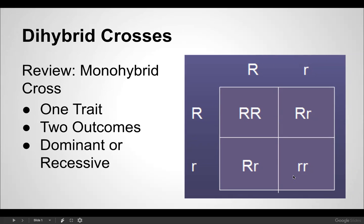The top one is a capital R dominant, lowercase r recessive, and the same thing on the left. When you put those together, you wind up getting that typical outcome where you have one pure capital R dominant, one pure lowercase r in the bottom right-hand corner, and diagonally are the hybrids — capital R, lowercase r. So you have two different outcomes: three dominant R's, and then the two lowercase r's expressing the recessive trait.